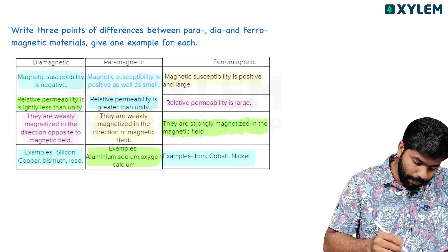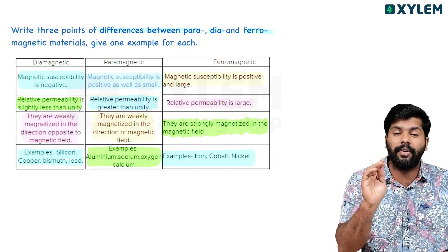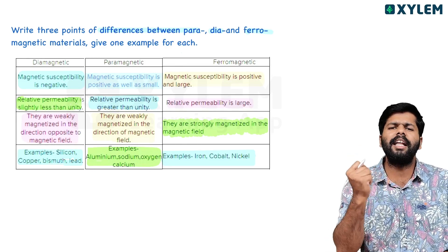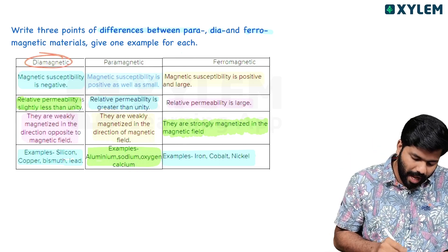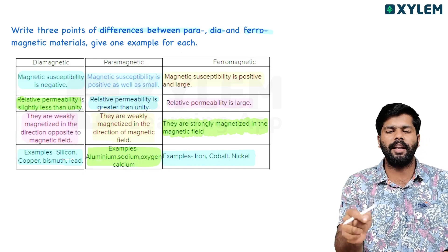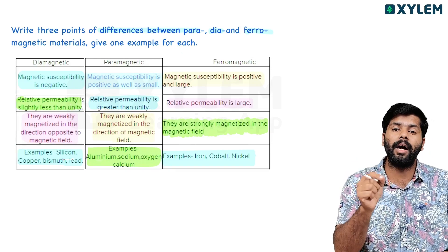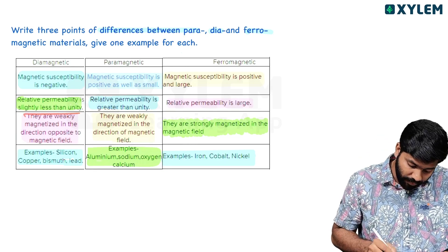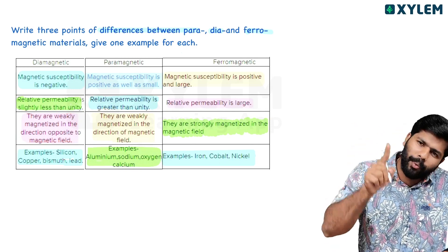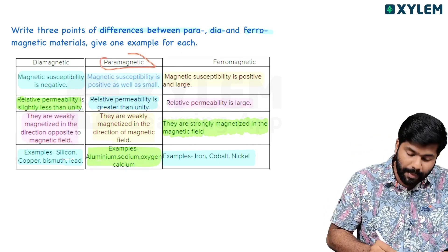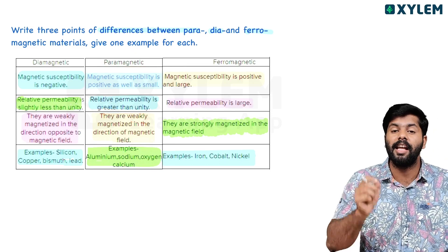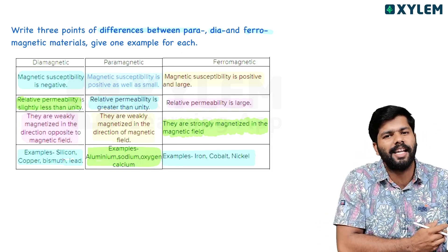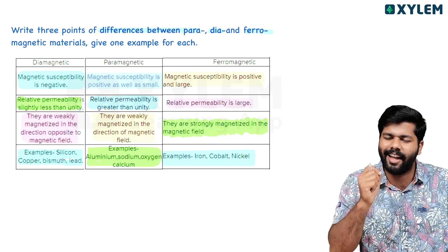The question is: write three points of difference between Paramagnetic, Diamagnetic, and Ferromagnetic — minimum 3 points. The example is important. Diamagnetic material, when placed in an external magnetic field, aligns dipoles in the opposite direction of the applied field — weakly magnetized opposite to the field. Paramagnetic materials are weakly magnetized in the same direction of the applied field. Ferromagnetic materials are strongly magnetized in the direction of the applied field.